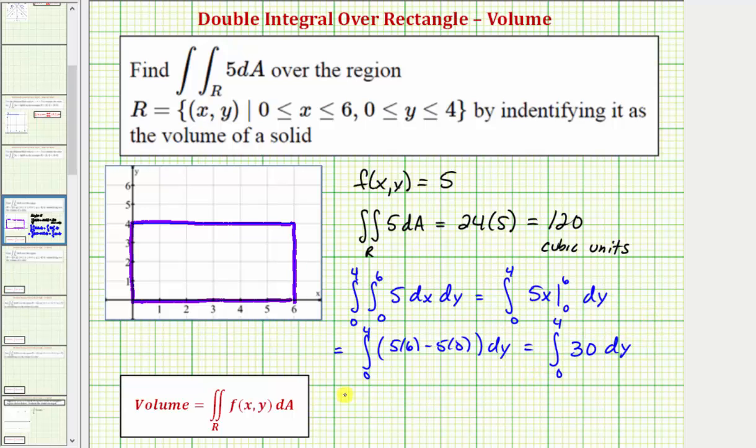Now we integrate with respect to y. So we have 30y, which would give us 30 times four minus 30 times zero, which again equals 120.